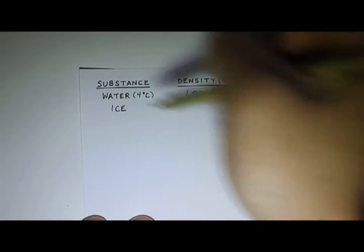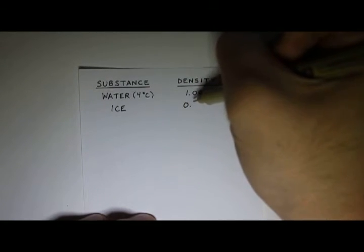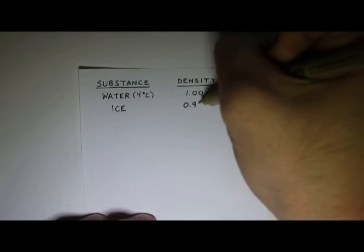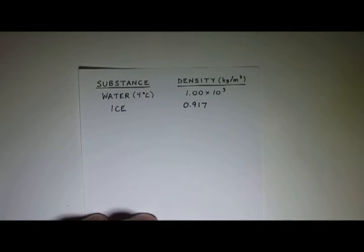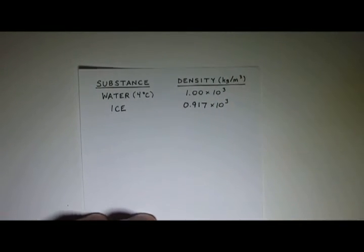What about ice? Ice has a density that is a little bit less. So it's about 0.917 times 10 to the third kilograms per cubic meter.